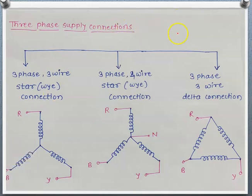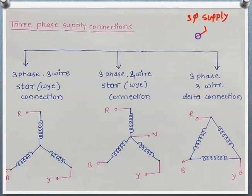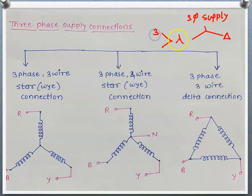Three-phase supply connections are basically classified into two types: one is star connection and another one is delta connection. Further, the star is classified into three-wire star connection and four-wire star connection.